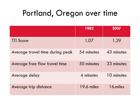Let's look at another example: data from Portland, Oregon across two time periods. Between 1982 and 2007, the TTI worsened from 1.07 to 1.29, suggesting congestion got worse. Yet during this same period, average travel time fell from 54 minutes to 43 minutes, primarily because trip distances decreased. The amount of delay did increase from 4 to 10 minutes, and driving in congested conditions may feel more onerous. Nevertheless, if we only focus on congestion and delay, we miss a huge part of the story — how far people have to travel to get where they want to go.